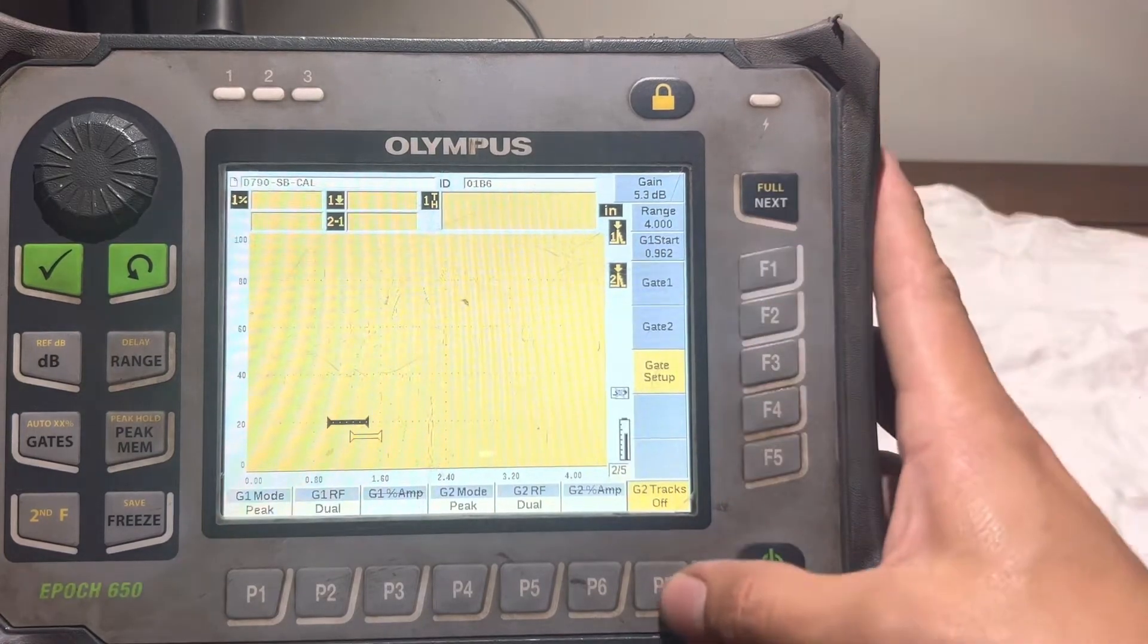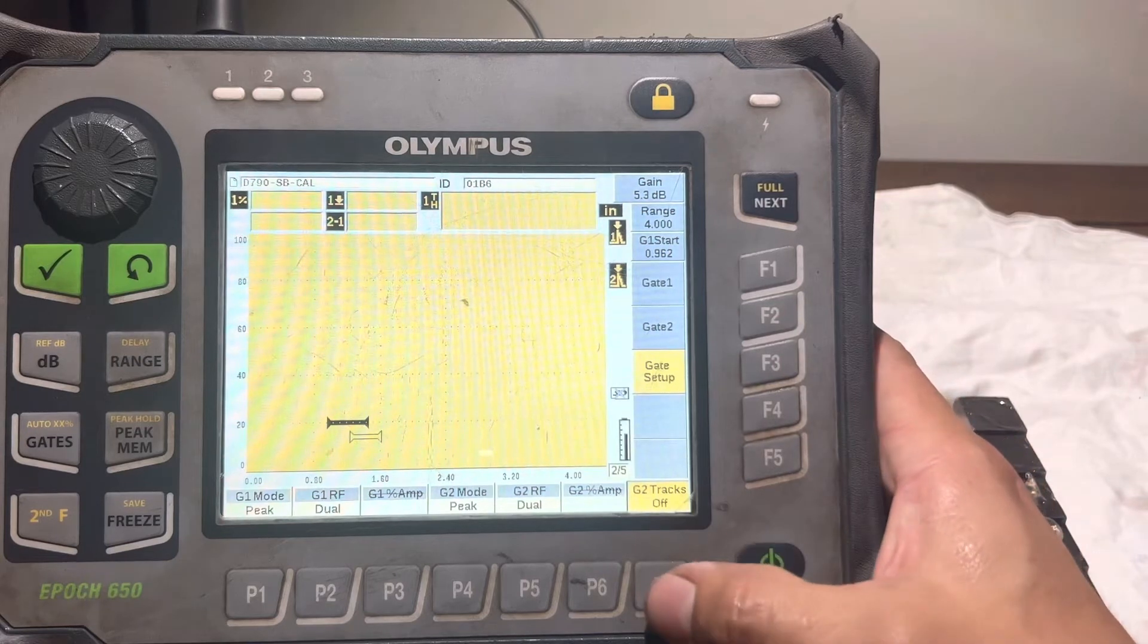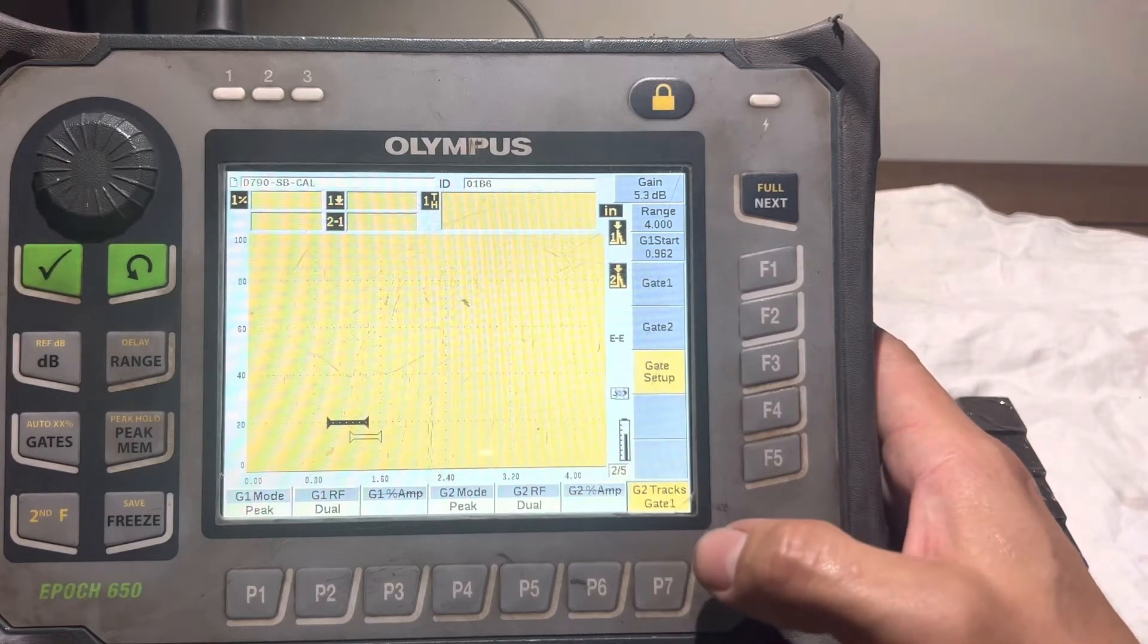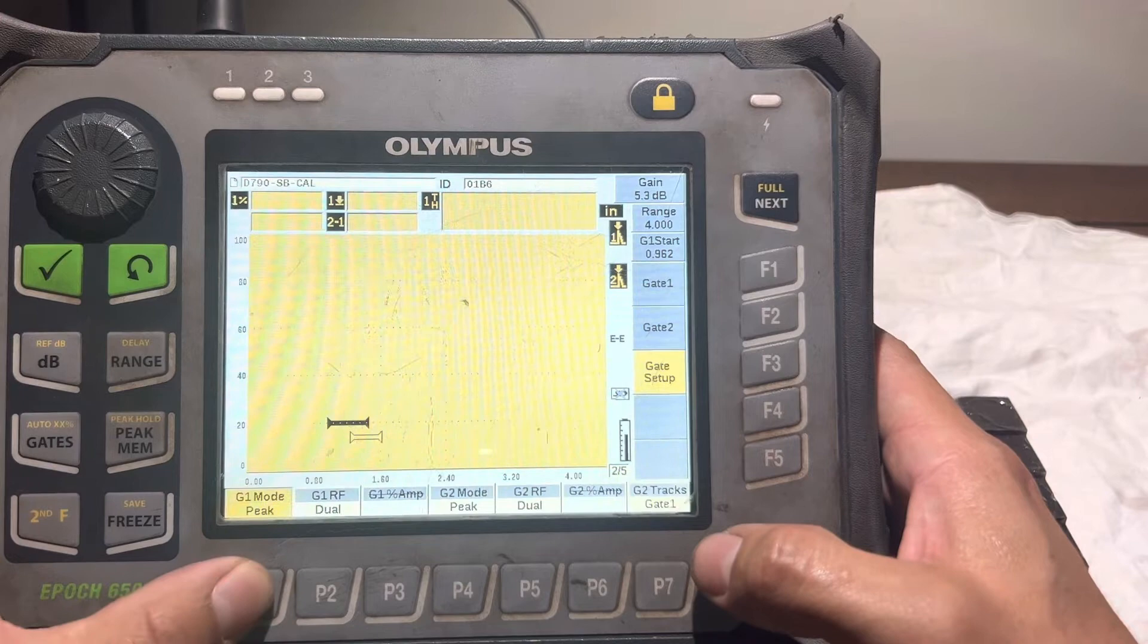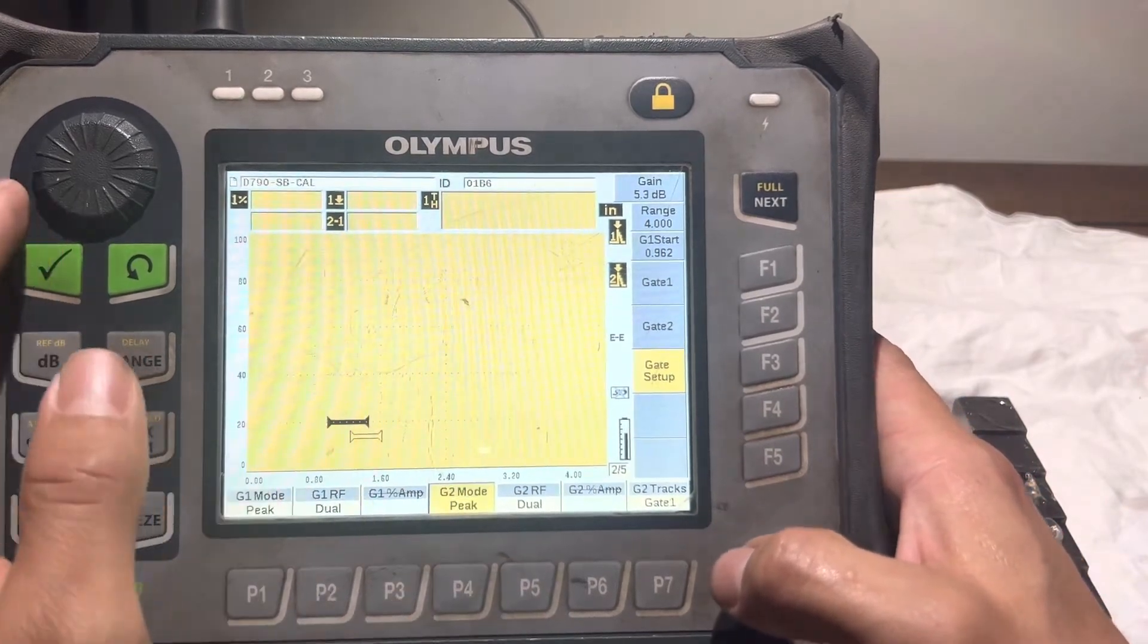I'm going to be calibrating it peak to peak and using echo to echo, so I'm going to turn on my tracker. You can see I have my first gate on peak, second gate on peak as well.